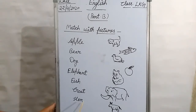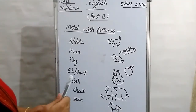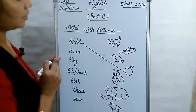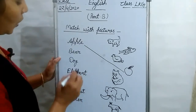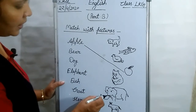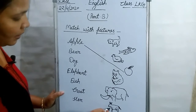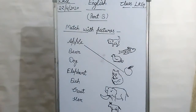Now, hen — H, E, N. Hen. So where is the hen? Here is the hen. So match this hen to this picture. Everyone, do this work in your copy. I am doing one for example. Apple — where is the apple? You have to do like this. And bear — you have to match with bear. Dog — you have to match with dog. Elephant — you have to match with elephant. Fish — you have to match with fish. And goat — you have to match with goat. And hen — you have to match with hen. Understood, everyone?